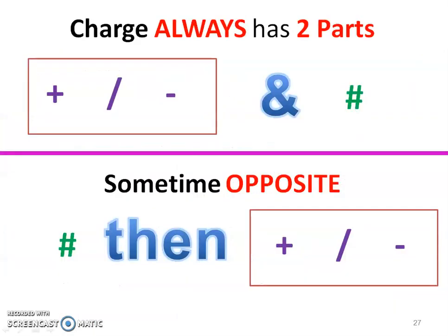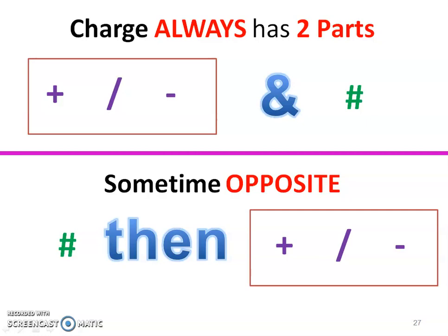A charge always has a positive or negative sign and a number associated with it. However, sometimes you'll see the number written before the sign — it really doesn't matter as long as you have both the positive/negative and a value associated with it.